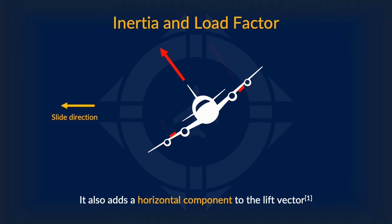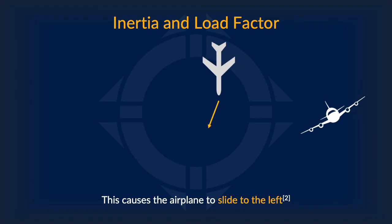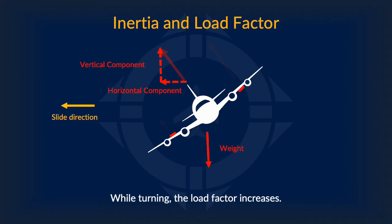Rolling into a bank also adds a horizontal component to the lift vector. The lift vector has now split into two parts. Only the vertical component creates effective lift, while the horizontal component allows the airplane to move sideways, essentially causing the airplane to slide to the left. One important thing to note here, however, is the existence of the load factor. While turning, the centripetal force — the horizontal component of the lift vector — causes an increase in load factor.